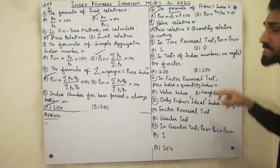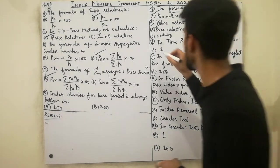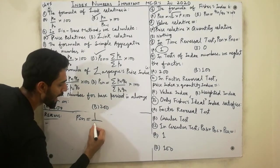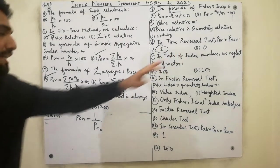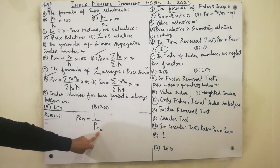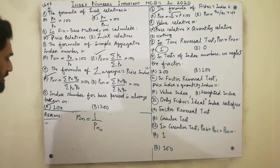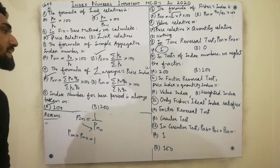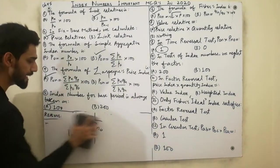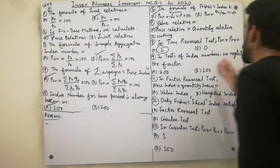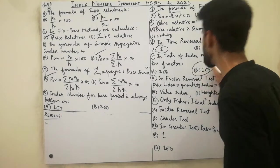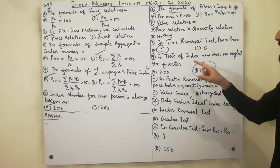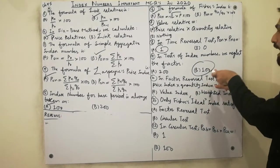Next MCQ: in the time reversal test, P-naught-N multiplied by PN-naught is always equal to 1. Must remember that in the time reversal test, P-naught-N equals 1 over PN-naught. Next MCQ: in any test of index numbers, we neglect the factor 100. Must remember that key point — in any test of index numbers, we do not take 100 into account.